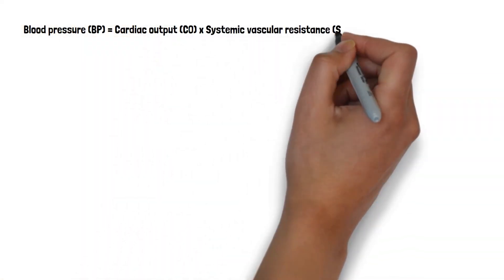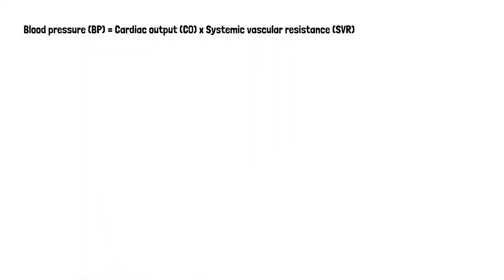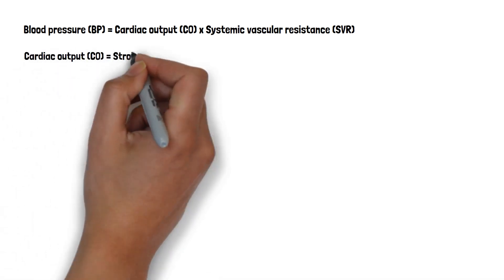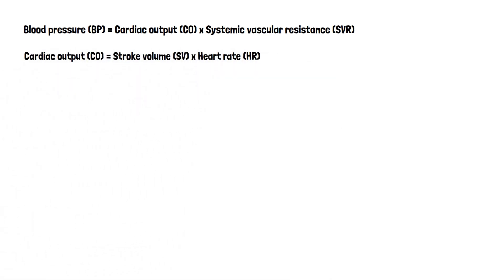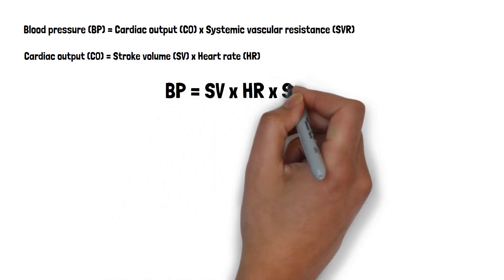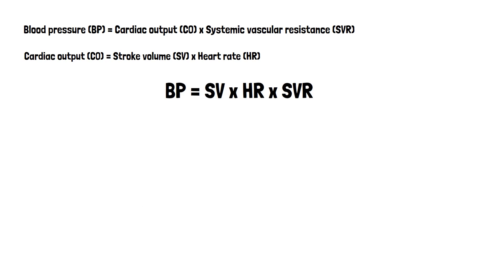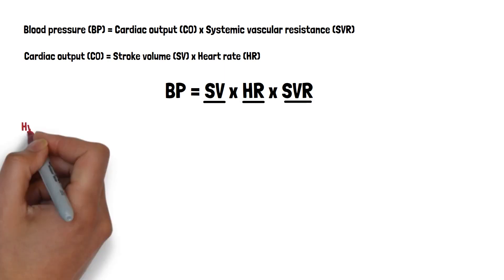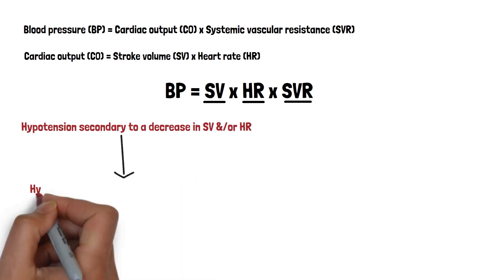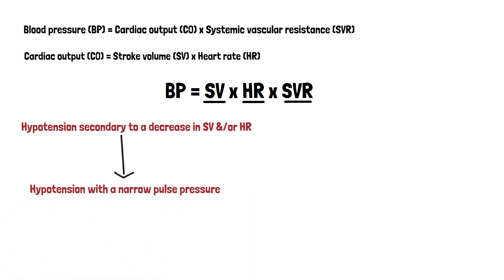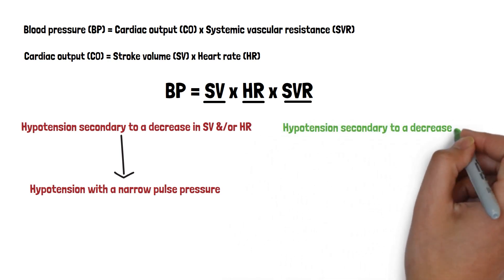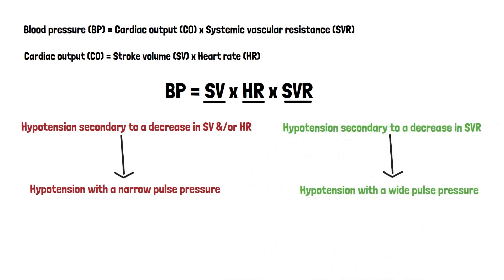As you probably know, blood pressure equals cardiac output multiplied by systemic vascular resistance, and cardiac output equals stroke volume multiplied by heart rate. This means blood pressure equals stroke volume × heart rate × systemic vascular resistance. A hypotensive patient has a decrease in one or more of these elements. A decrease in stroke volume and/or heart rate usually causes hypotension with a narrow pulse pressure, while a decrease in systemic vascular resistance usually causes hypotension with a wide pulse pressure. This is very important to remember.